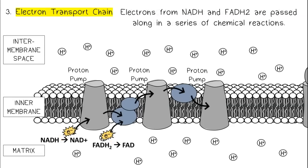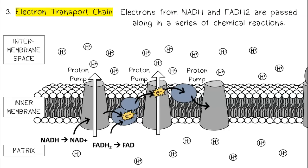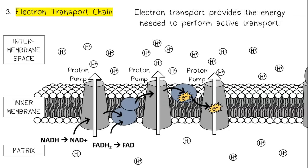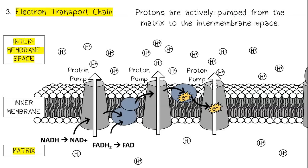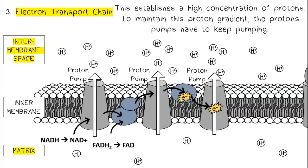Electrons from NADH and FADH2 are passed along in a series of chemical reactions. Electron transport provides the energy needed to perform active transport. Protons are actively pumped from the matrix to the intermembrane space. This establishes a high concentration of protons.